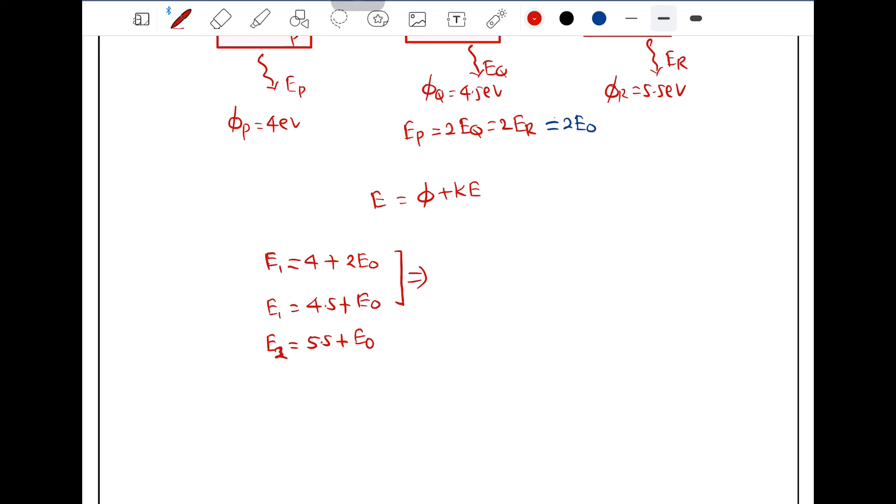So E1, E1 will get cancelled. 4 minus 4.5 will be minus 0.5. 2E0 minus E0 will be plus E0 is equal to 0. So from this we get E0 is equal to 0.5 electron volt.